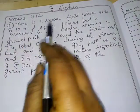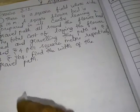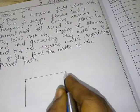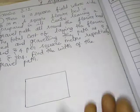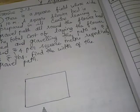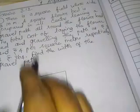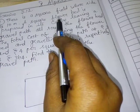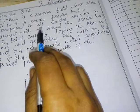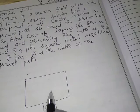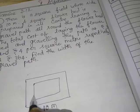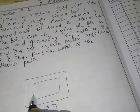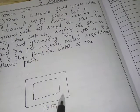First, there is a square field whose side is 10 meters. One square flower bed is prepared in its center. This is the square field, and a square shape is prepared in its center. This is the gravel path all around the flower bed.